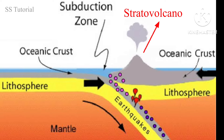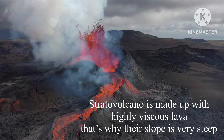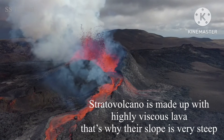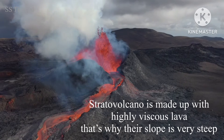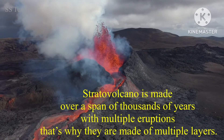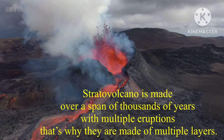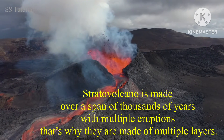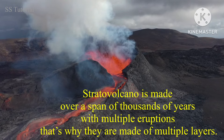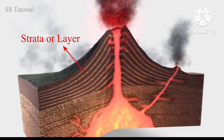Strato volcanoes are very common in the subduction zone. Generally they erupt violently and are made up of highly viscous lava. A composite volcano is made over a span of thousands of years through multiple eruptions, which is why they are made of multiple layers — and that's why they are known as strato volcanoes.